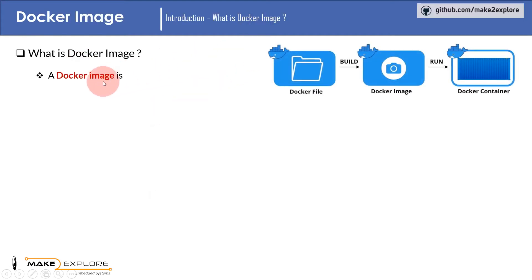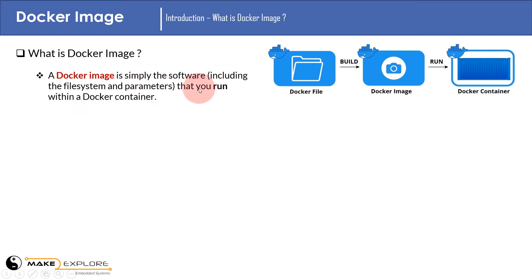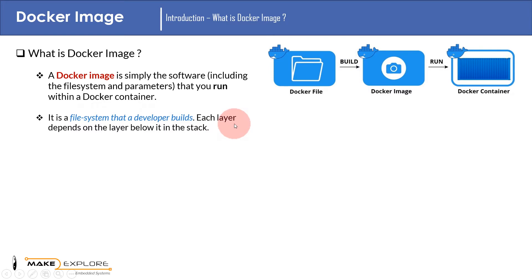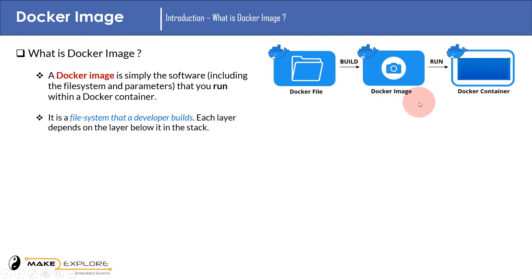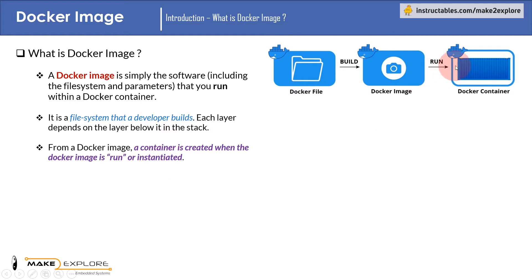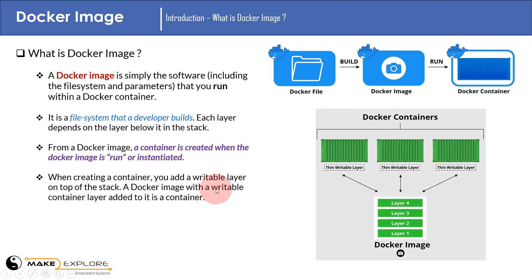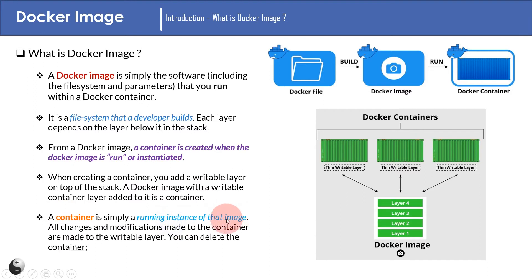Now let's see about what is a Docker image. A Docker image is simply the software, including the file system and parameters, that you run within a Docker container. It is a file system that a developer builds, where each layer depends on the layer below it in the stack. When you build Docker files, it creates a Docker image. When a Docker image is run or instantiated, a container is created. When creating a container, you add a writable layer on top of the stack. A Docker image with a writable container layer added to it is a container — simply a running instance of that image. All changes made to the container are made to the writable layer. You can delete the container; however, the Docker image remains untouched. This is the beauty of Docker and the containerized environment concept.